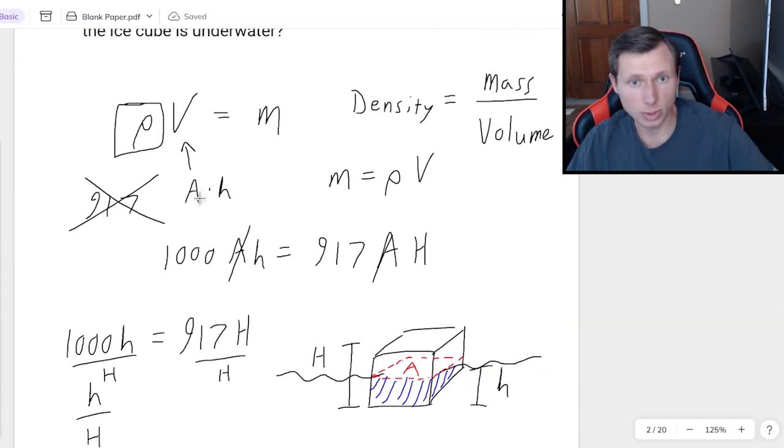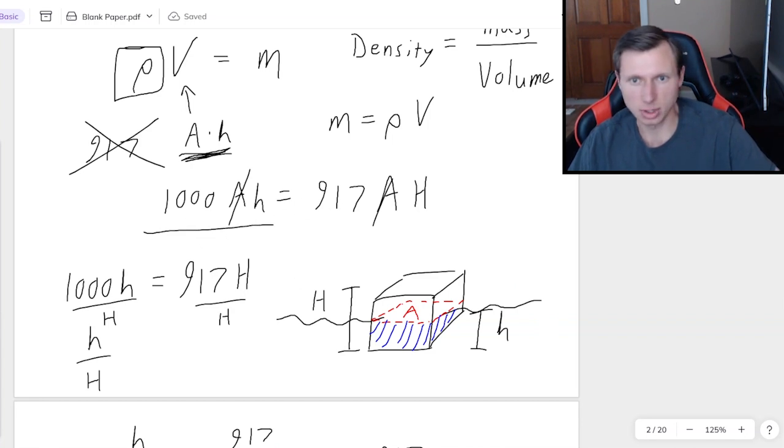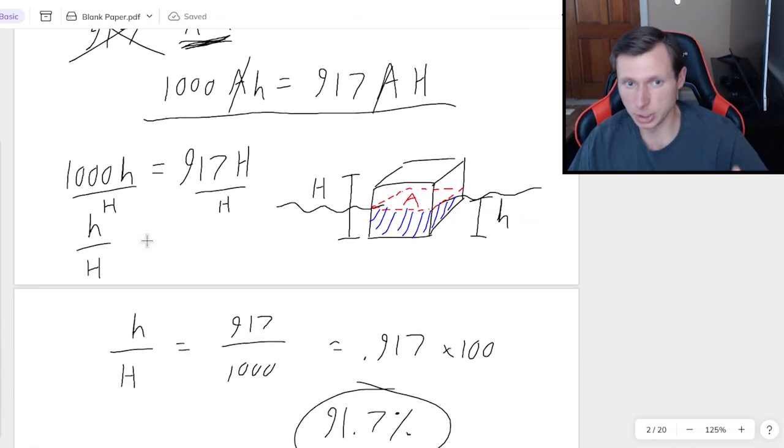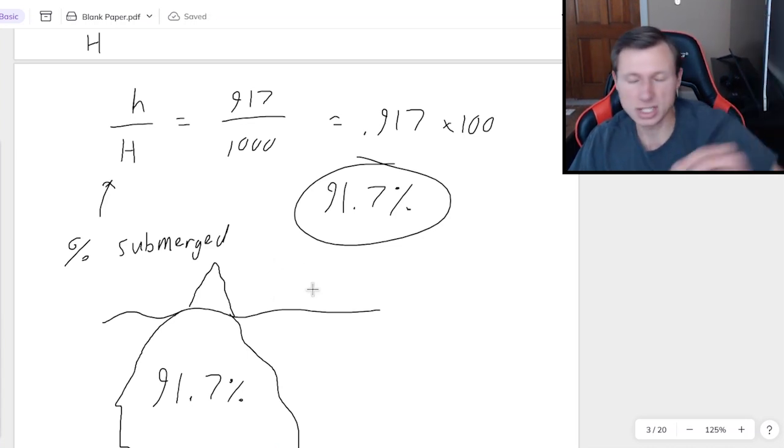So just to recap what I did really quickly, I said rho times V equals mass. Volume is equal to area times height. By the way, you should probably always use this relationship for volume when solving Archimedes principal problems because generally that's what you have to do to solve the problem. And then for the right side we had to find the mass by using the density equals mass over volume formula and solving for mass. And then from there the rest of it was plugging into the formula and solving for little h over big H, which is always going to be the percent that is submerged. And if you wanted the percentage that was above water you would just do this calculation and then do 100 minus 91.7 and you get 8.3. So very easy to find the percent above water too.